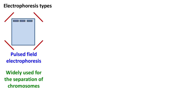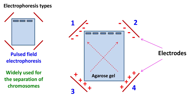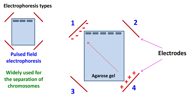Pulsed field gel electrophoresis is widely used for the separation of chromosomes or very large DNA fragments. In this method, four electrodes are used. The electrodes apply an alternating electric field which is at an angle of 120 degrees. The alternating electric field across the diagonal allows separation of large DNA fragments and chromosomes.